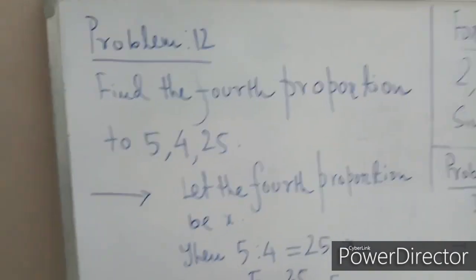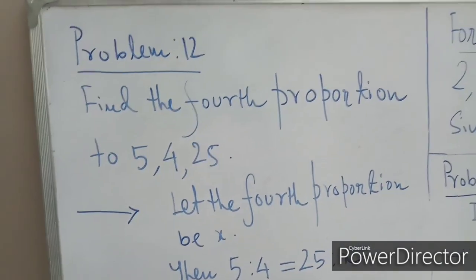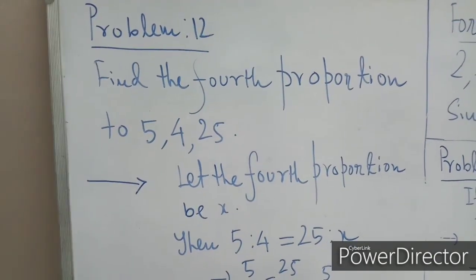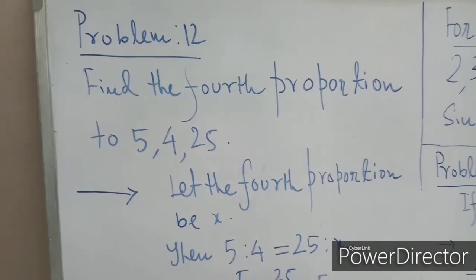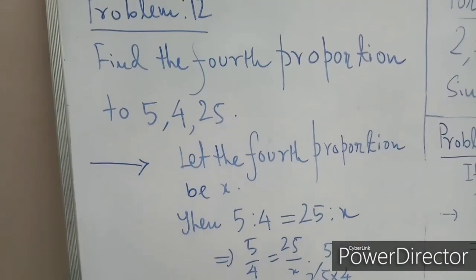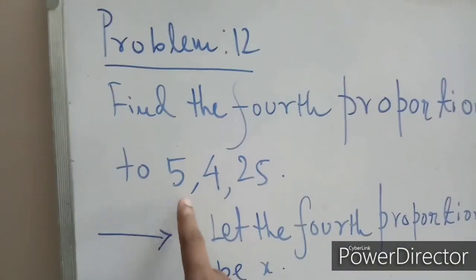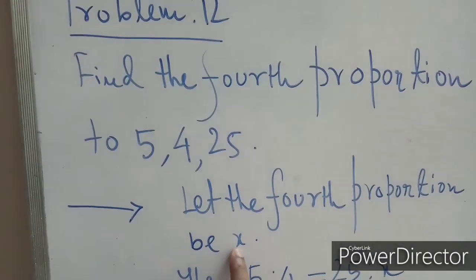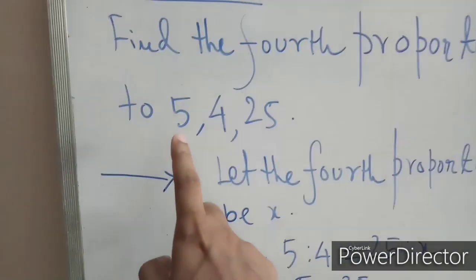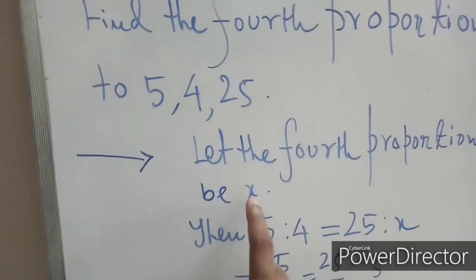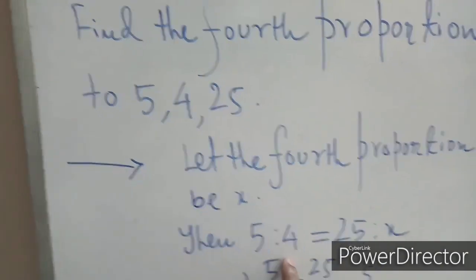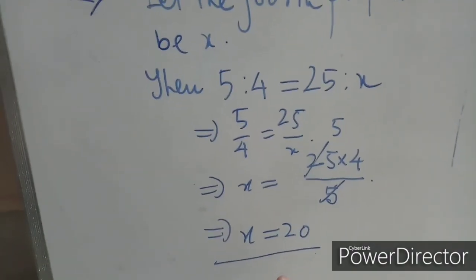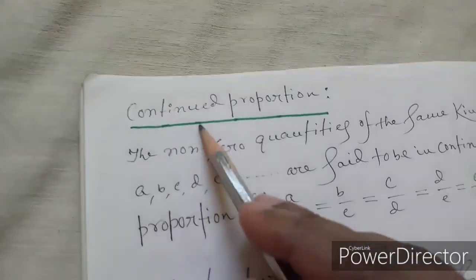Problem number 12: find the fourth proportional to 5, 4, 25. Let the fourth proportional be x. Here 5, 4, 25, x are the first, second, third, and fourth terms. Since they are in proportion: 5 : 4 = 25 : x. After simplification, x = 20.